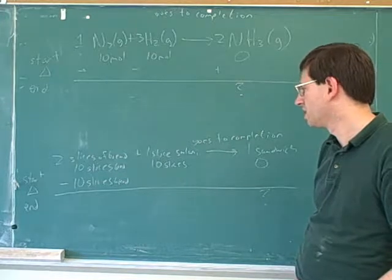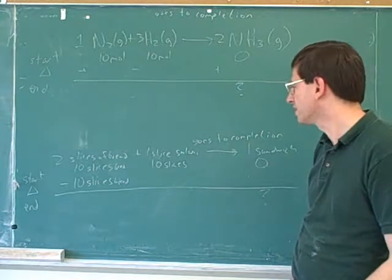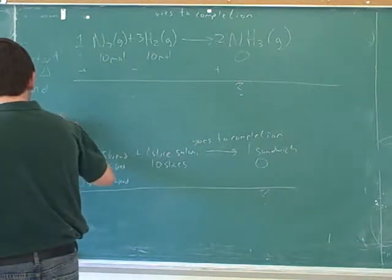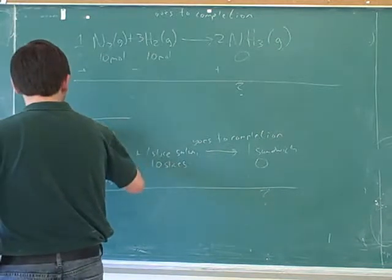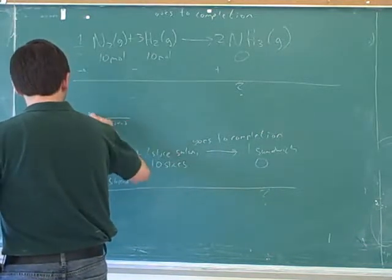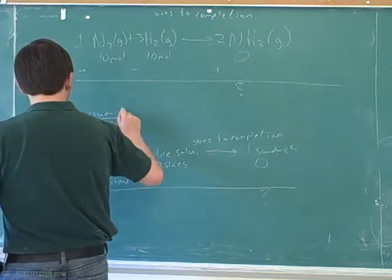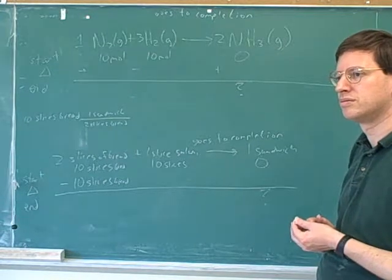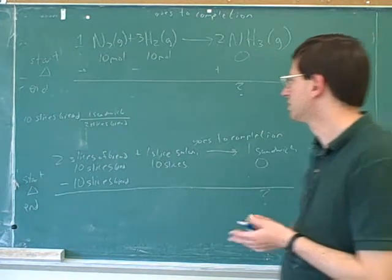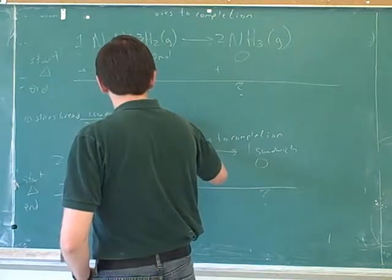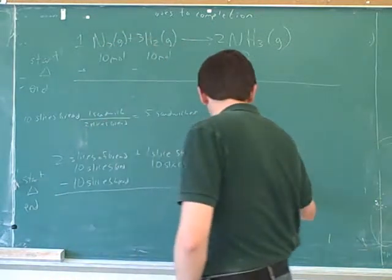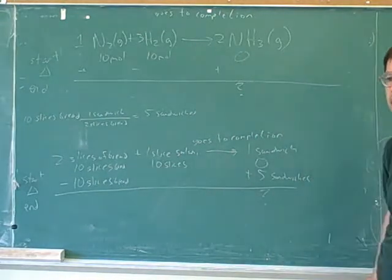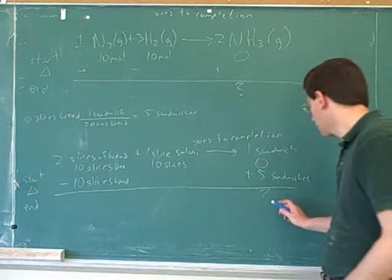And then I can write down my starting ten slices of bread, correct? Right. And then I have—for two slices of bread are used for every sandwich. Okay. I'm just going to give you five sandwiches. So I know I have to classify the change on the sandwich here. Okay. And at the end will be five sandwiches. Okay.